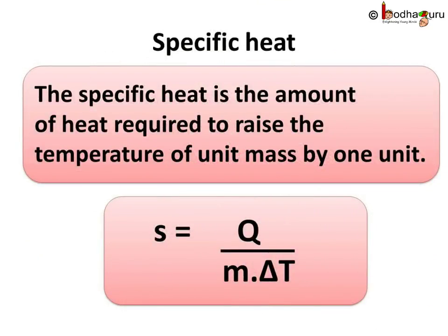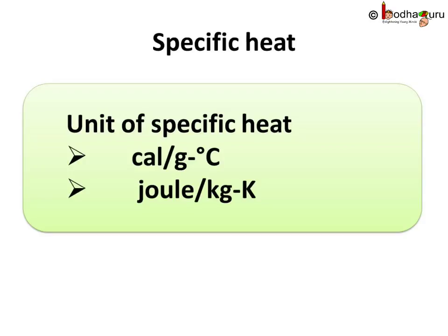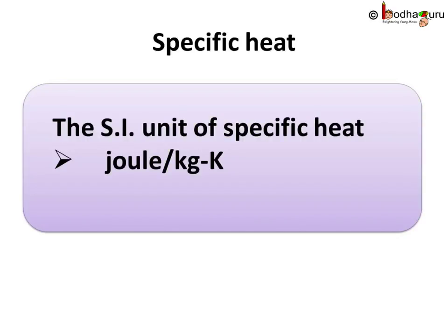So, to sum up what we learned today: the specific heat is the amount of heat required to raise the temperature of unit mass by 1 unit. If Q is the amount of heat absorbed by the substance, M is the mass of the substance, and delta T is the change of temperature, then the specific heat denoted by S is equal to Q divided by M multiplied by delta T. The unit of specific heat is 1 calorie per gram degree Celsius, and the SI unit of specific heat is joule per kilogram Kelvin.